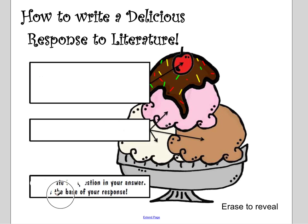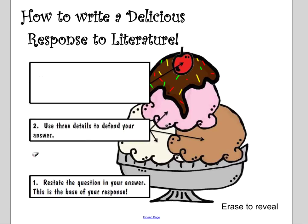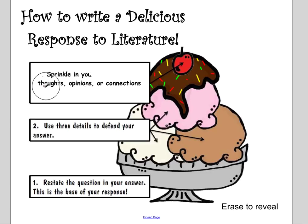The bowl represents the first thing you need to do, which is to restate the question in your answer — this is the base of your response. The scoops are three details that you need to defend your answer. And the sprinkles are your last sentence where you get to sprinkle in your own thoughts, opinions, or connections.